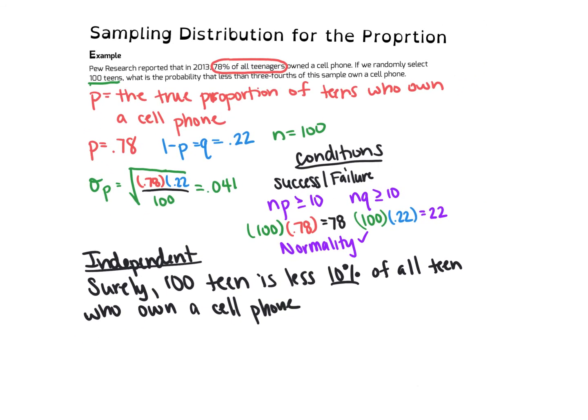Now, once we have all of this, we can actually find the probability. Basically, what we're saying now is because these two conditions are met, because the independent condition and the success-failure condition are met, we know that p hat, which is going to be the sample statistic, p hat is approximately normal with the mean of the population proportion, 0.78, and a standard deviation of the standard error, which is sigma p, 0.041.